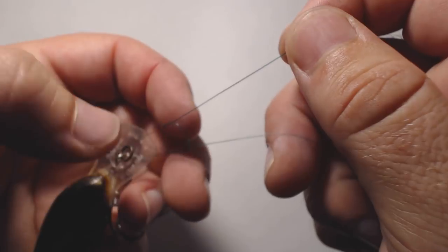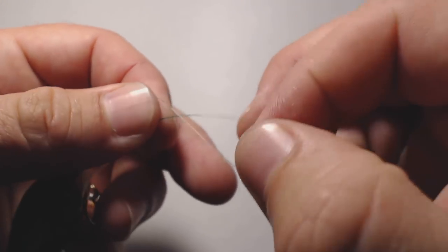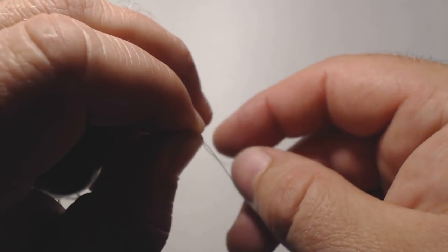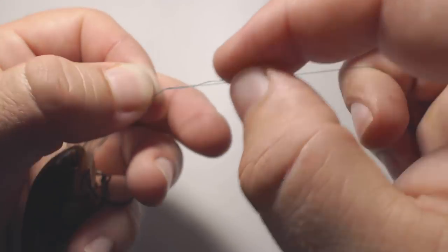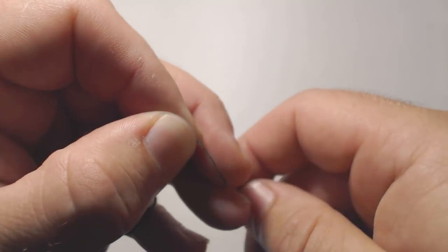And then what you're going to do is pinch it right about there just to keep it steady, and we're going to wrap this tag end around the main line about four to six times or so. I'll do it about four times here.